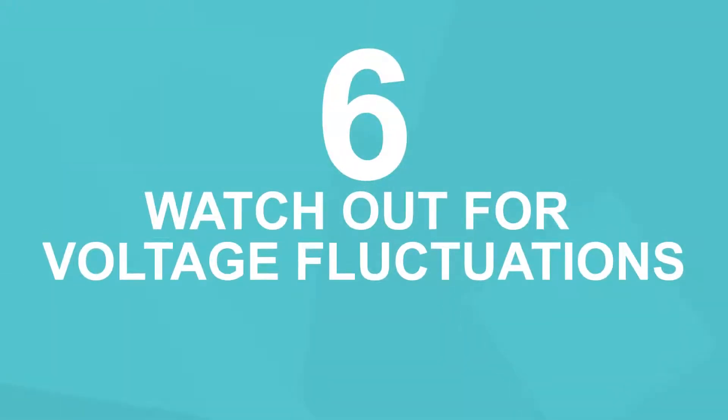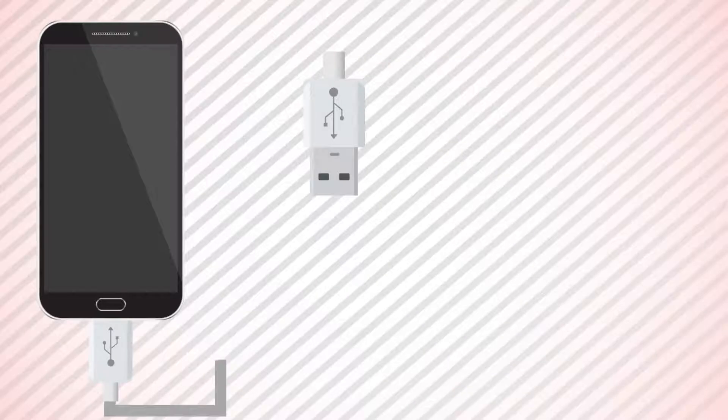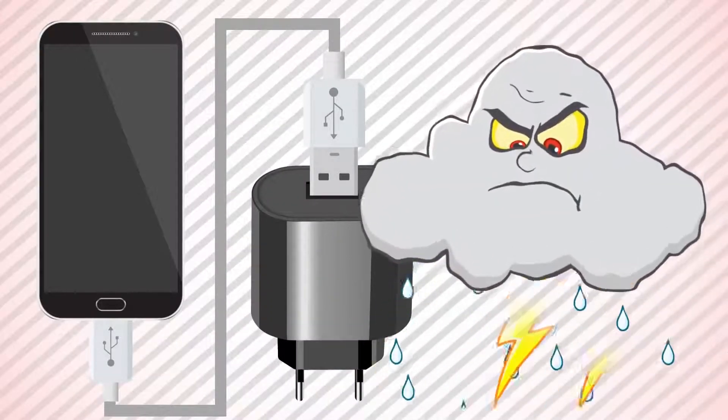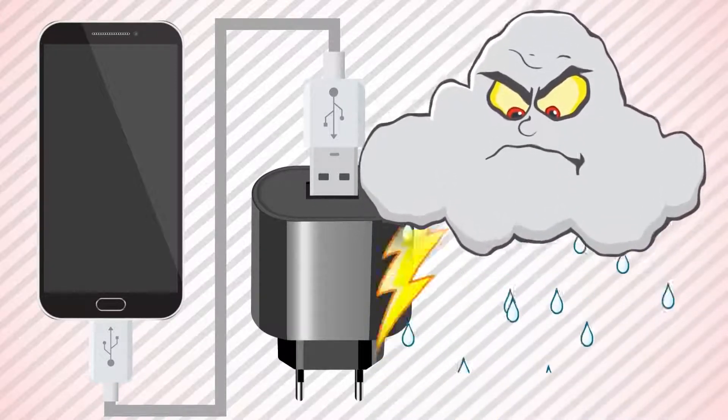Number 6. Watch out for voltage fluctuations. At the approach of a thunderstorm, never charge your phone. Actually, the same goes for all the electrical appliances you have. It's not a myth. During a thunderstorm, electric appliances can experience the full wrath of nature.